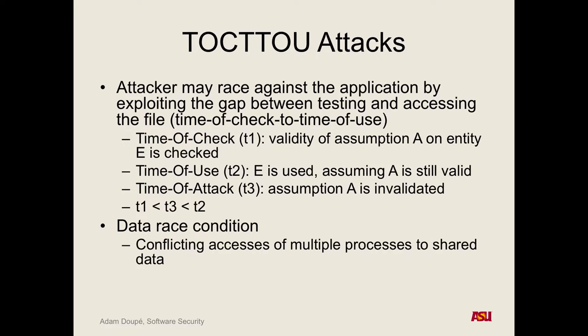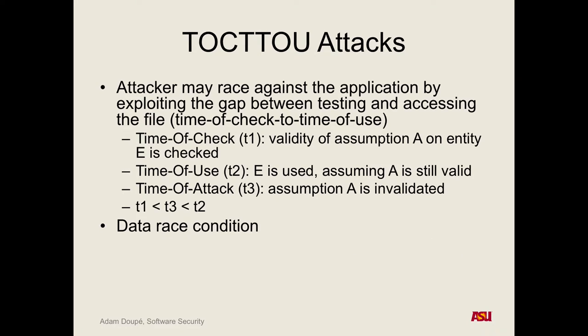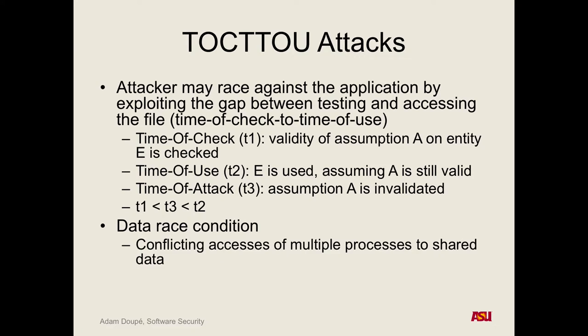There are many different ways this vulnerability can manifest itself. There could be data race conditions when you have multiple processes that all have access to some shared data. If you don't have any kind of locking mechanism in place — where only one process can check the data and then use it — then you could run into this TOCTOU vulnerability.